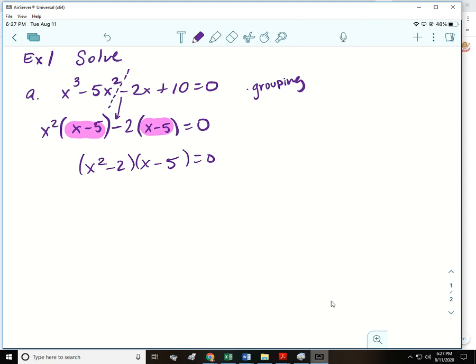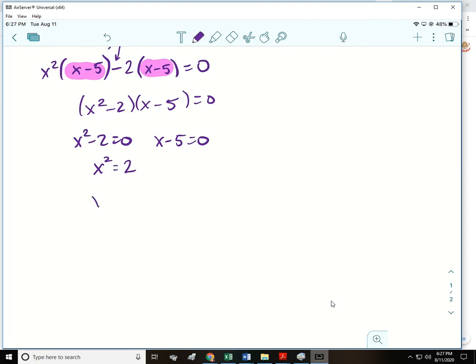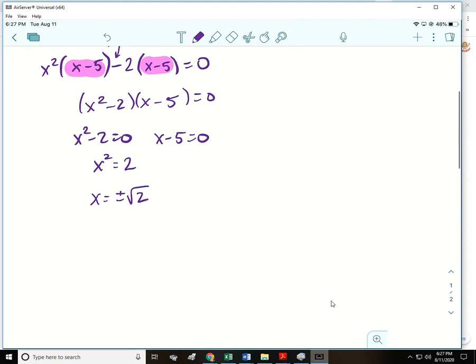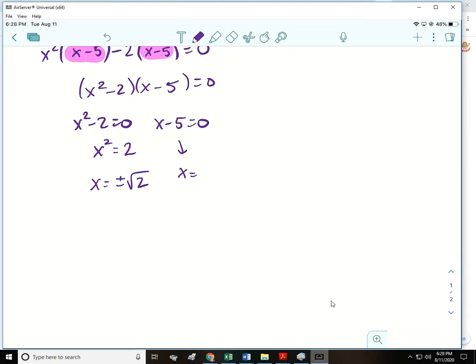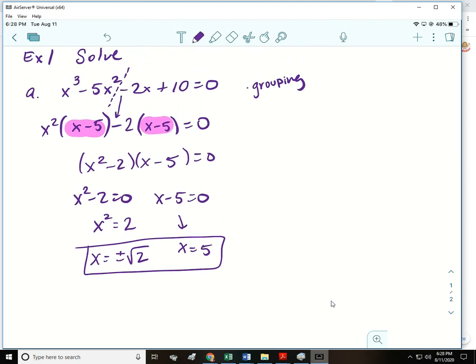To solve by factoring we're going to set each one of those equal to 0. We would go ahead and add that 2 and take the square root. Don't forget that when you solve equations by finding the square root you have to do the positive and negative square root. And then for this one that's just going to be 5. So this polynomial function has three roots or three solutions and that matches with the largest exponent.